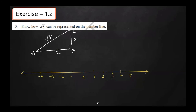Take a base of 2 centimeters starting from zero. At that point (B), draw a perpendicular using your protractor, and on this perpendicular take a distance of 1 centimeter. Label the points A, B, and C. Then join point C and point A.